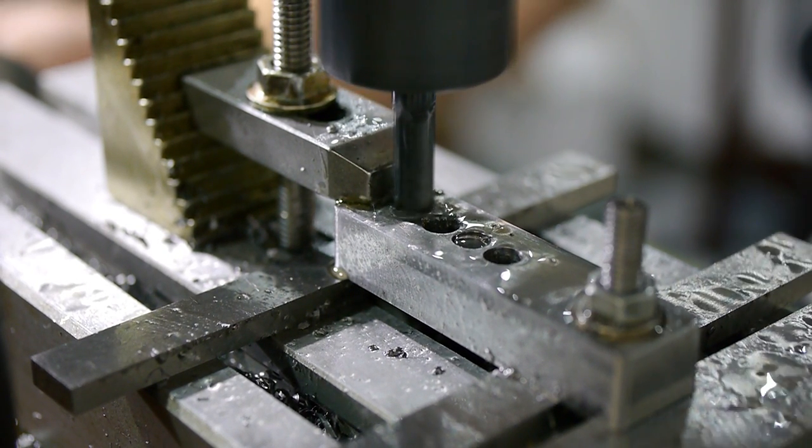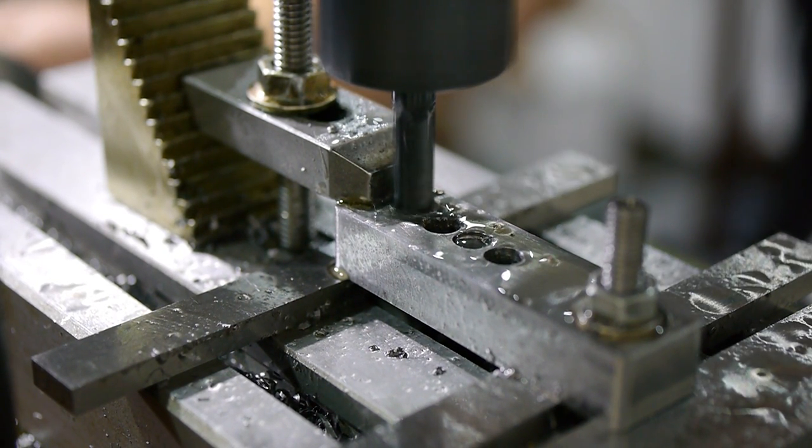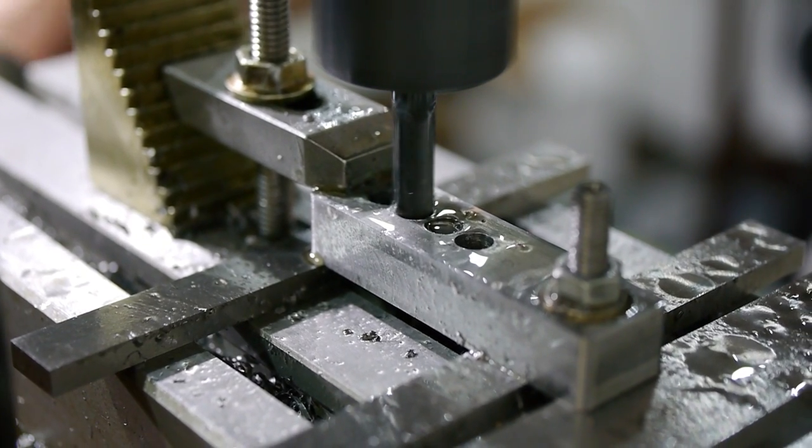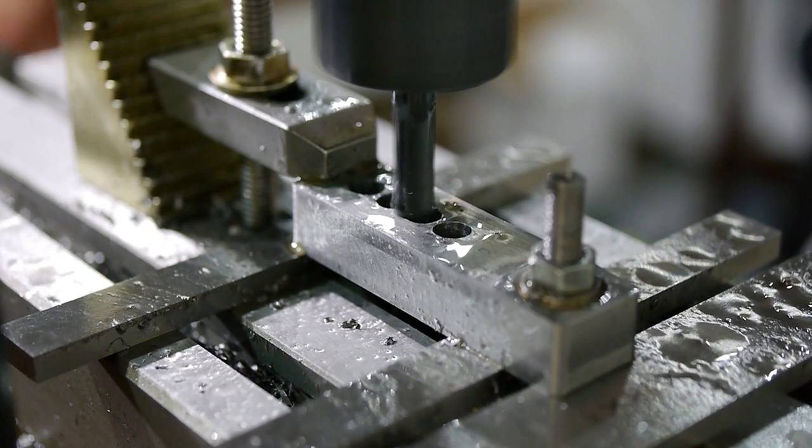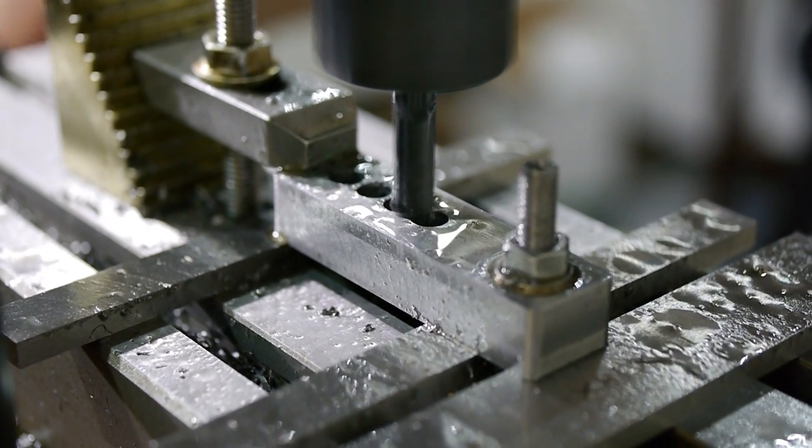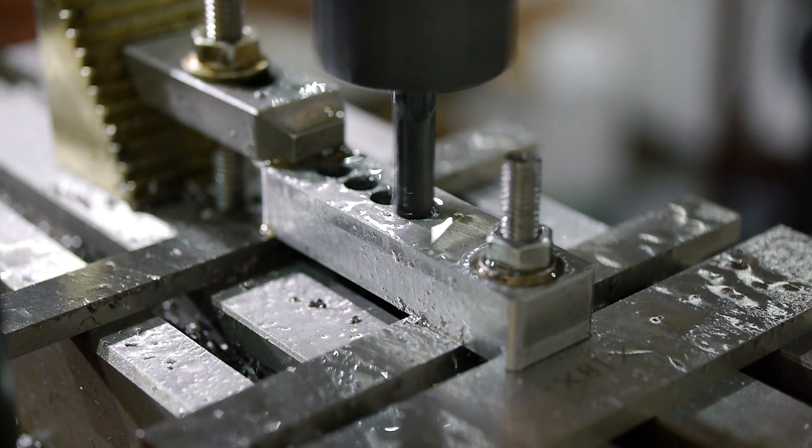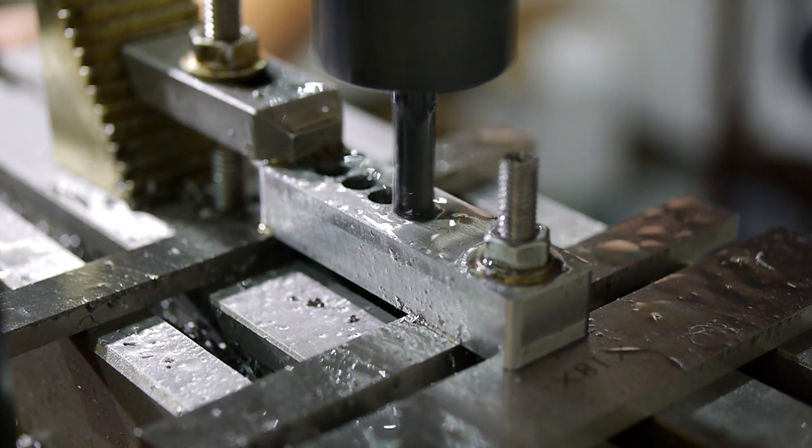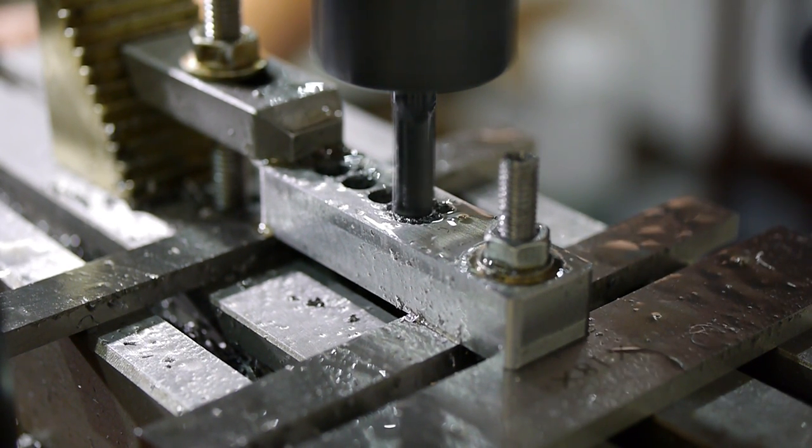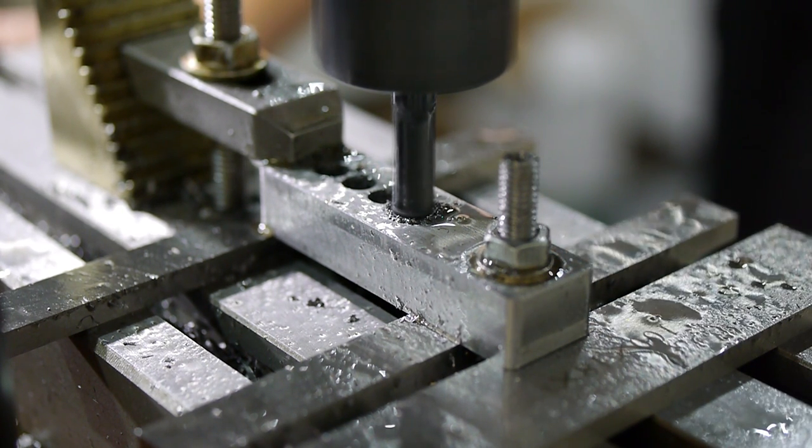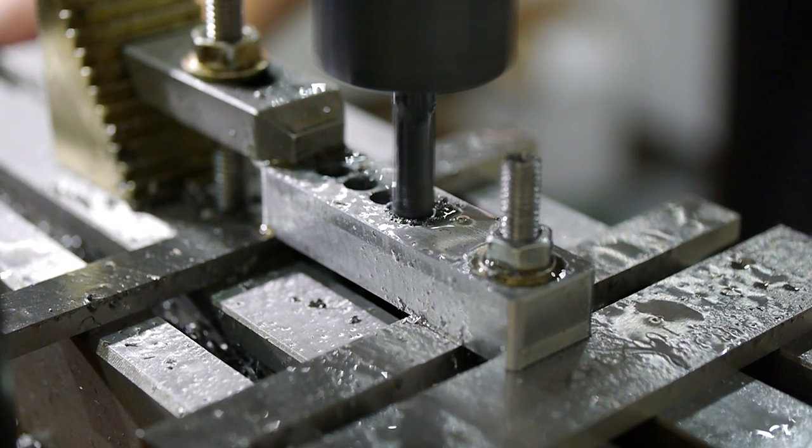At the end of each pass, the end mill must be plunged down into the material before making the next pass. End mills don't cut well at the center, so plunging needs to be done very carefully and can cause lots of vibration. I've drilled a hole at both ends of the slot, with the center exactly lined up with the center of the end mill when it reaches that end. When the end mill is plunging into the material, only the outer parts of the cutting face need to cut into the material, which makes the operation much easier and safer.